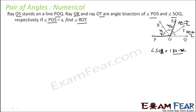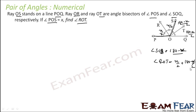We need to find angle ROT. Angle ROT equals angle ROS plus angle SOT, which is x by 2 plus 180 minus x by 2. The x terms cancel, leaving 180 by 2, which equals 90 degrees. So angle ROT is 90 degrees.